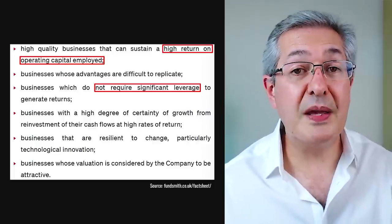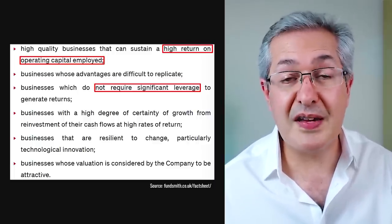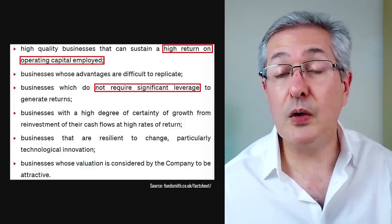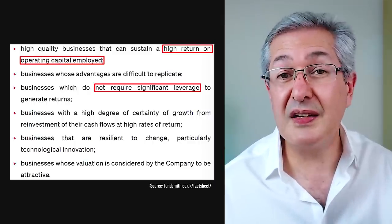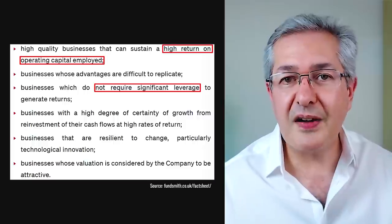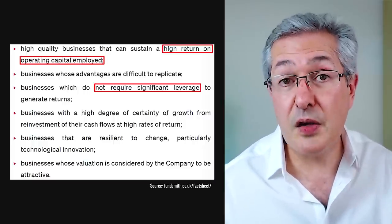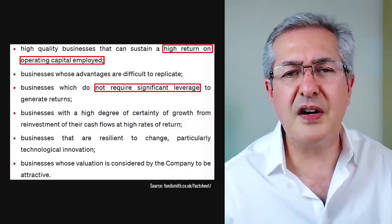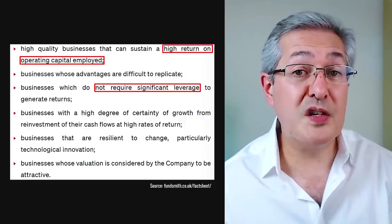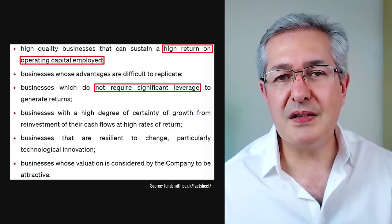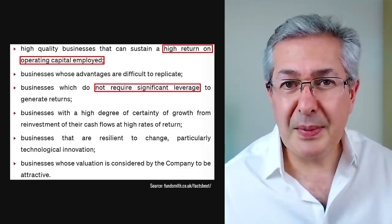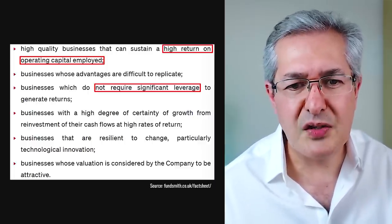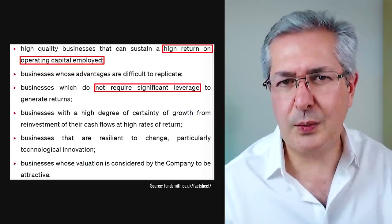To get more insight into how Fundsmith operates, you can look at their investing principles. They look for stocks with a high return on operating capital employed, and companies without significant leverage — both of which are easy to quantify numerically. Other criteria are more subjective, such as businesses whose advantages are difficult to replicate — the idea of a moat which Benjamin Graham promoted — but which is really difficult to roll into an index that a passive fund can track. Another hard-to-quantify criterion would be businesses resilient to change, particularly technological innovation.